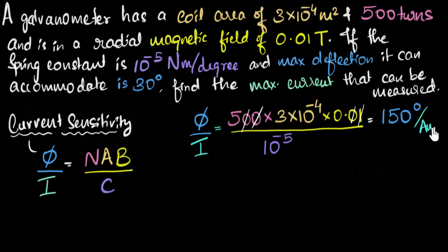You might have a question. How do we know it's degrees or radians? That's a good question. Well, notice in the spring constant, it's given 10^-5 Newton meters per degree. So that tells me that this is in degrees. Okay, so what is the meaning of this? This means in our galvanometer, if I send one amp of current, the deflection we get is 150 degrees. That's a pretty large deflection. But now we are given that the maximum deflection that the galvanometer can accommodate is only 30. It cannot accommodate more than that.